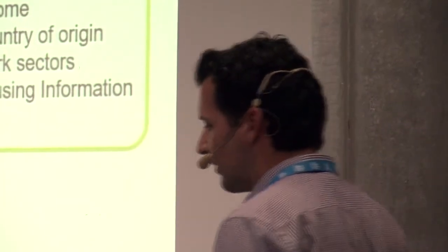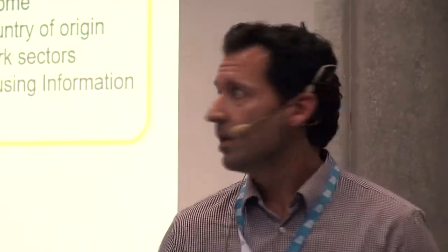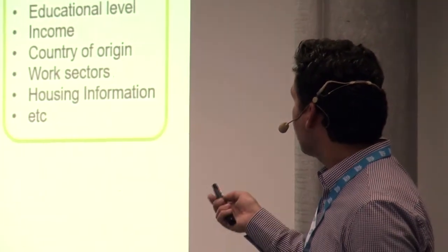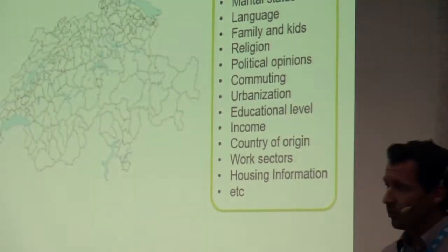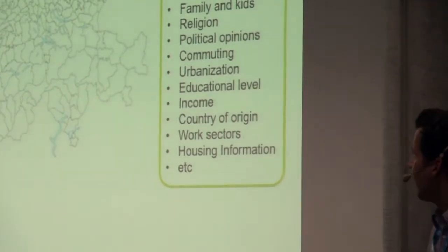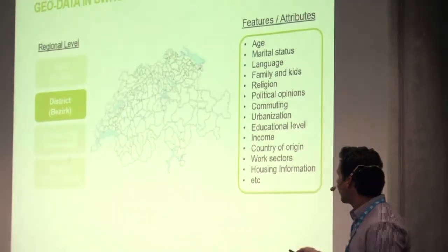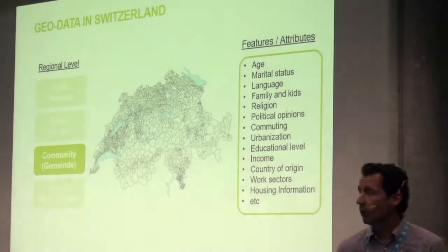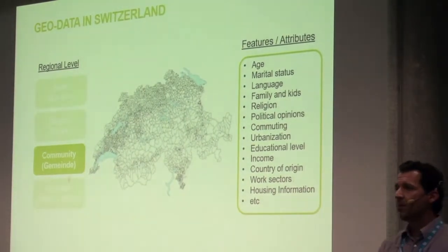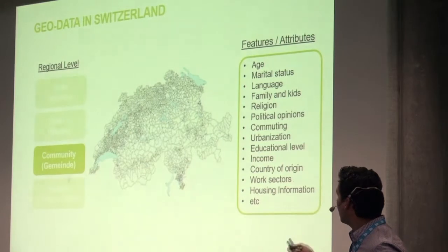Let me be more specific about this data. For the 26 cantons in Switzerland, you can have information about features like age, marital status, and language of the population. Going one level deeper, you can separate Switzerland into more than 120 districts and get all this information for each district. The same applies for the political communities — Switzerland can be separated into more than 2,500 political communities — and for each we can have all these features and attributes.